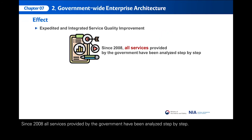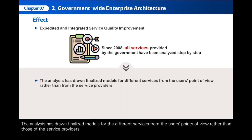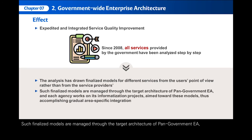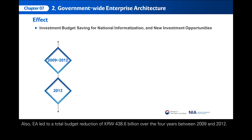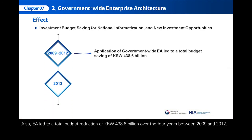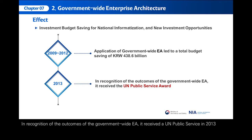Since 2008, all services provided by the government have been analyzed step-by-step. The analysis drew finalized models for the different services from the users' points of view rather than those of the service providers. Such finalized models are managed through the target architecture of pan-government EA, and each agency promotes its informatization projects aimed toward these models, thus accomplishing gradual area-specific integration. EA led to a total budget reduction of 438.6 billion Korean won over the four years between 2009 and 2012. In recognition of the outcomes of the government-wide EA, it received a UN public service award in 2013.